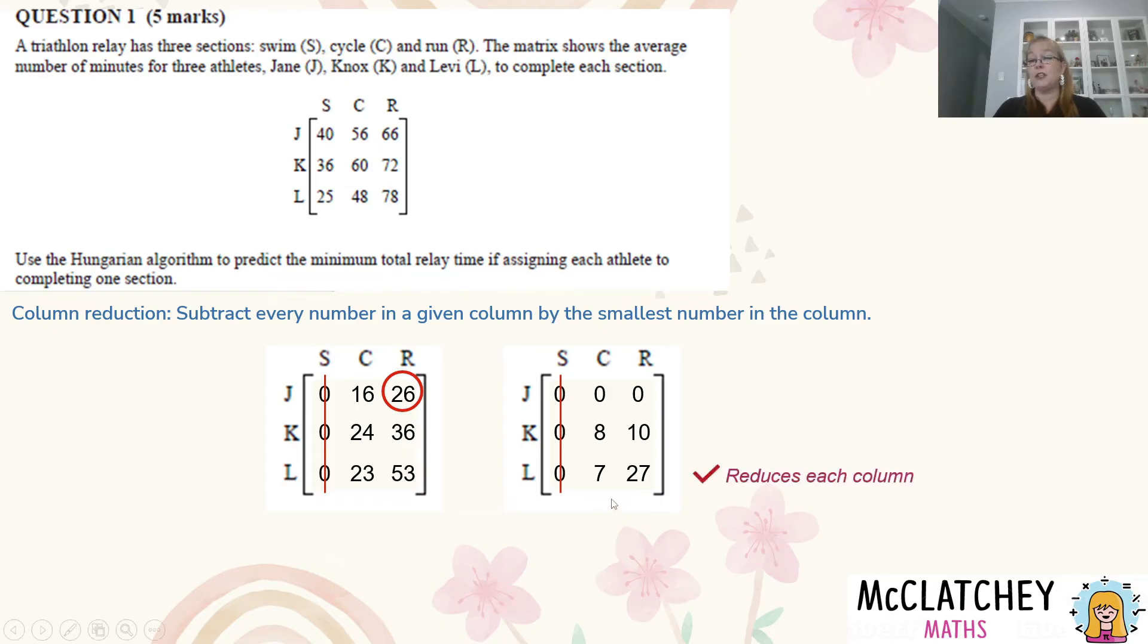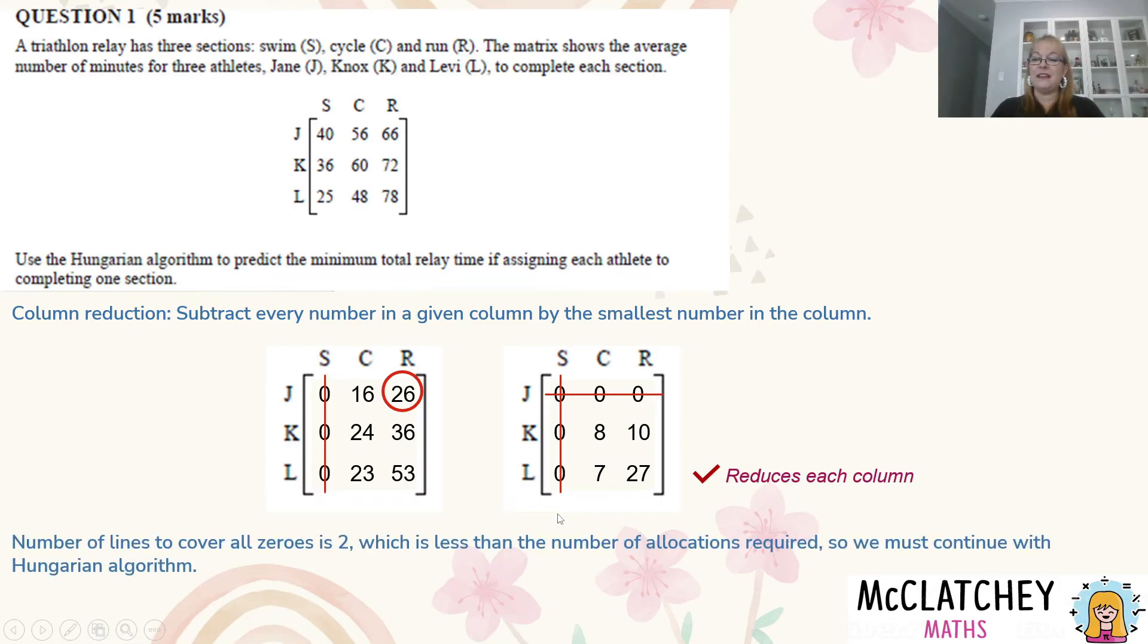I've done my column reduction now and I get my second mark. Okay so now I need to cover my zeros again and the smallest number of covers I can do is two. It's still not the same - I need three all together - so I've got to continue with the Hungarian algorithm.